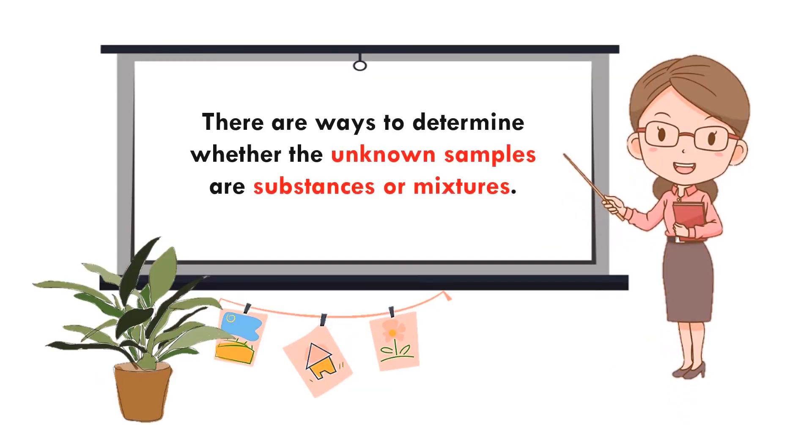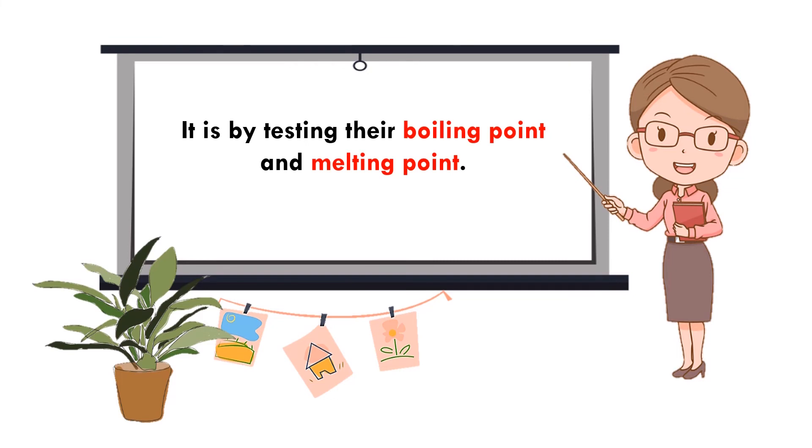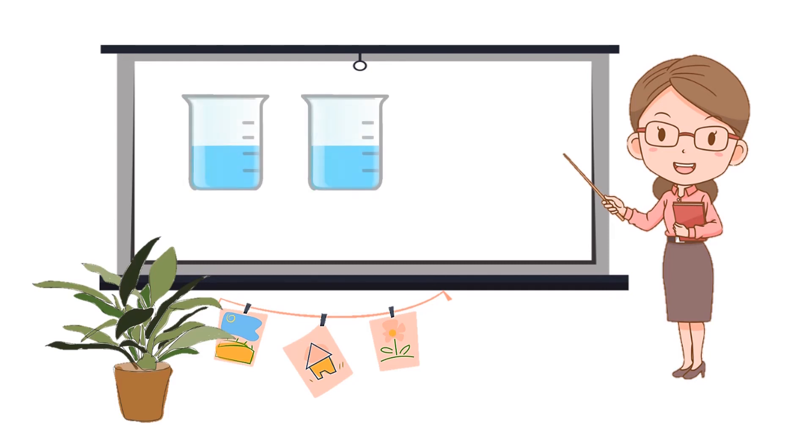There are ways to determine whether the unknown samples are substance or mixtures. It is by testing their boiling point and melting point. If the unknown samples are liquid, we can test its boiling point to determine which one is a substance or a mixture. Let us label the sample into liquid A and liquid B.